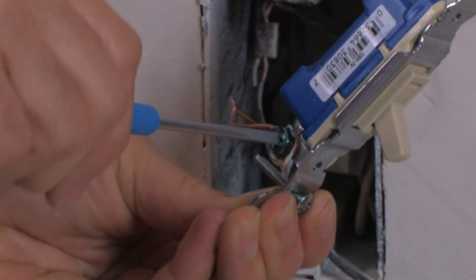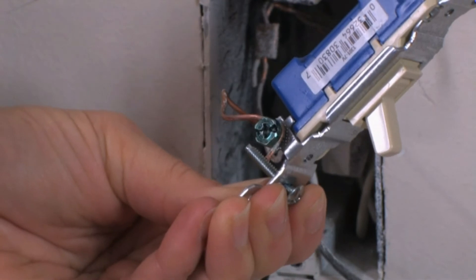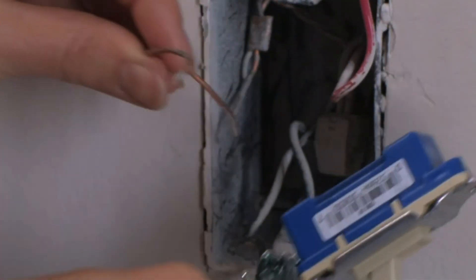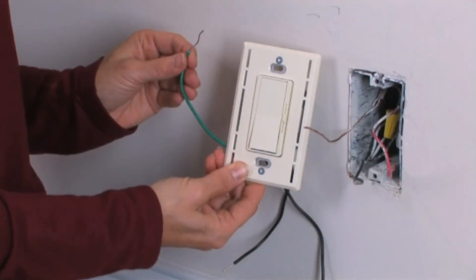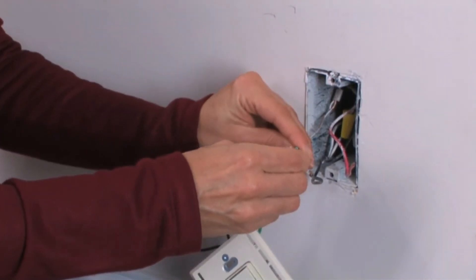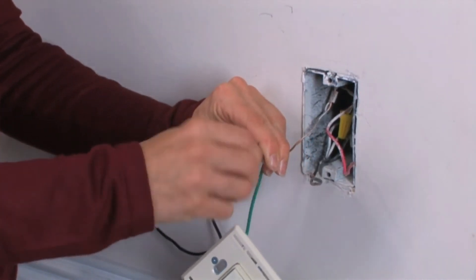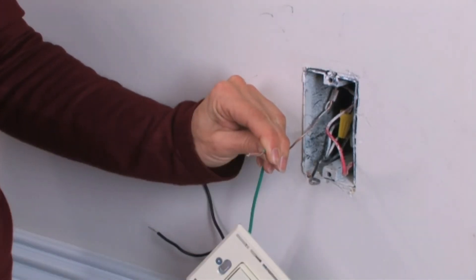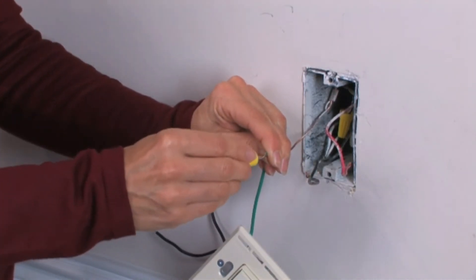Then use your screwdriver to loosen the green screw and remove the ground wire from the switch. To install your dimmer, first connect your ground wire from your dimmer to your wall box. Remember, you'll be connecting a green wire on the dimmer to a green or bare copper wire in the wall box.